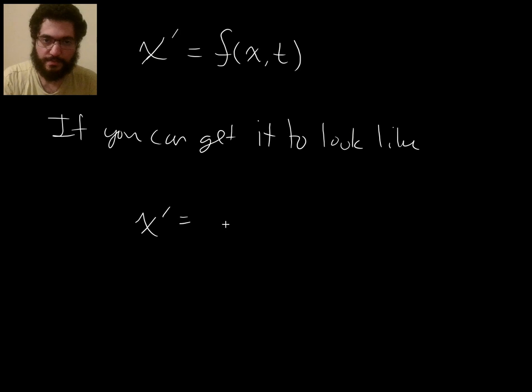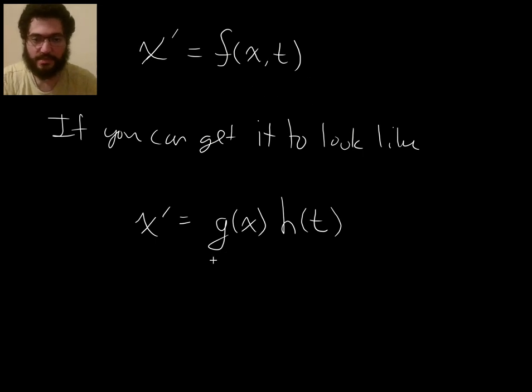x prime equals some function of x only and then times some function of t only. So if you can write this f of x and t as some g of x times some h of t, then you can separate. Then it works.